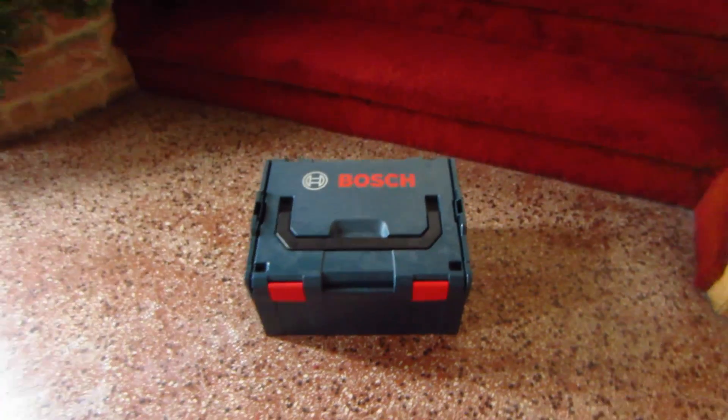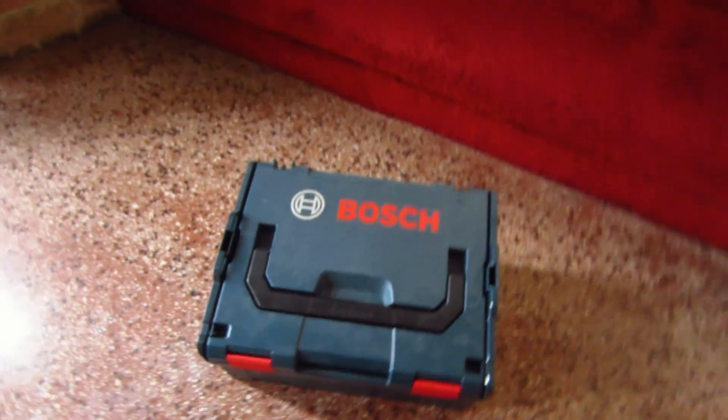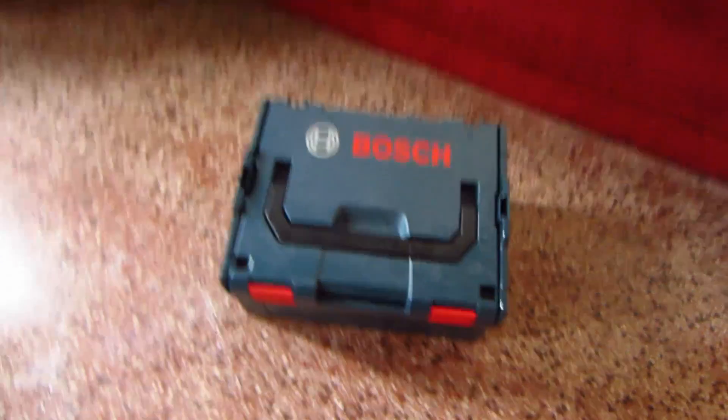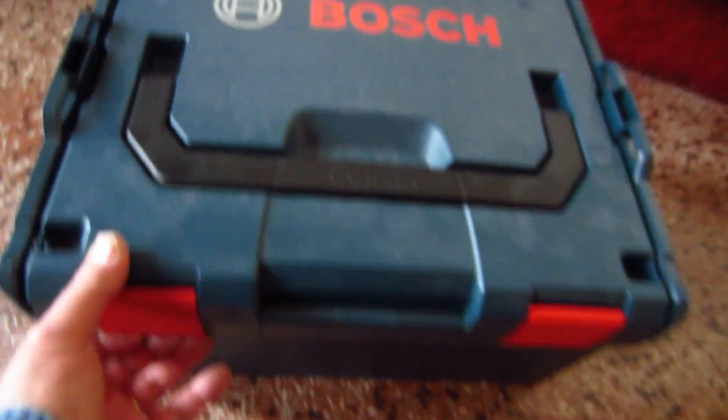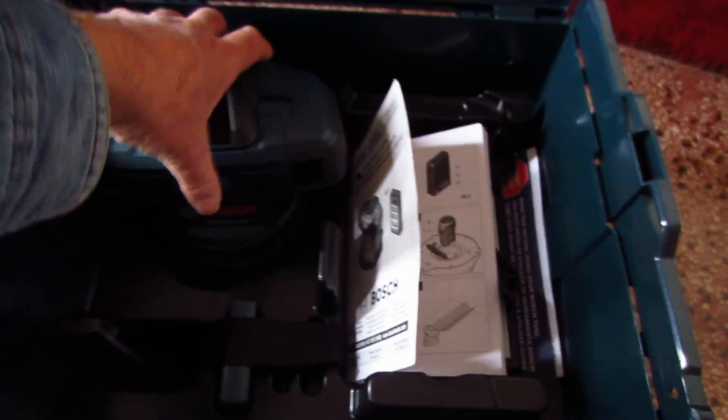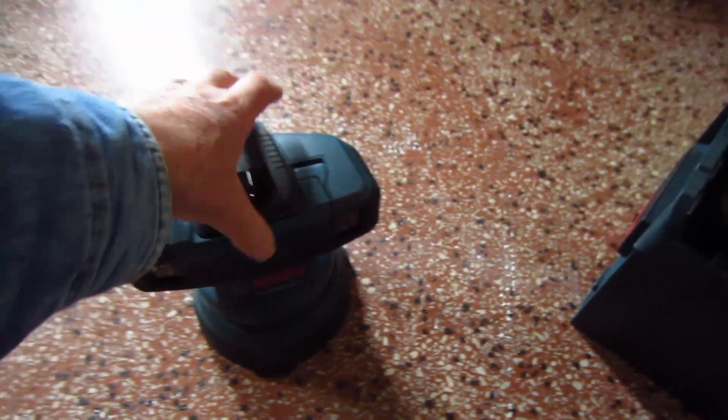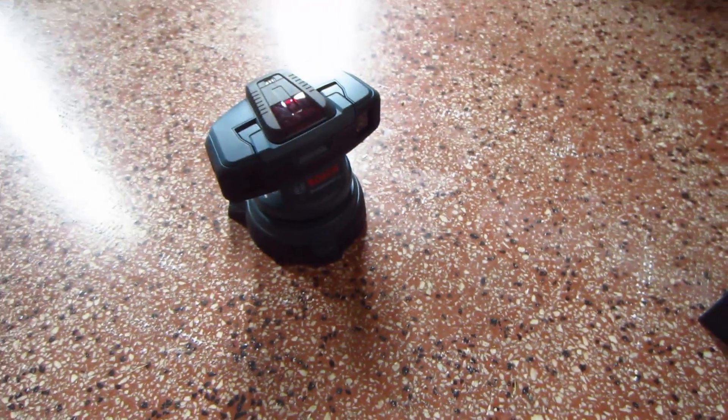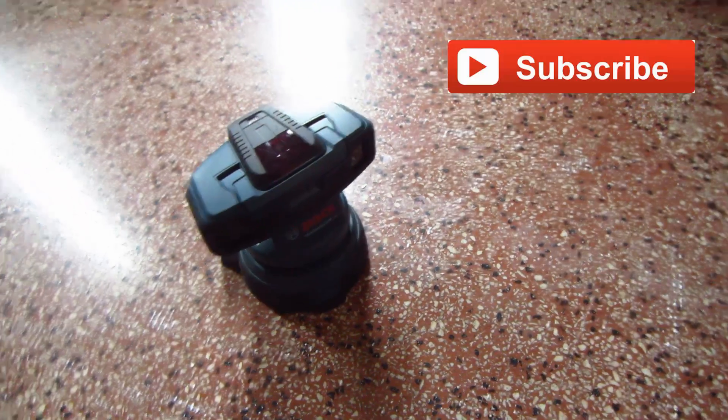Okay, so this is the Bosch GLS II. It comes in this box and you can see in a second it's a laser that is used to check the flatness and levelness of a floor, concrete floor or whatever floor you want.